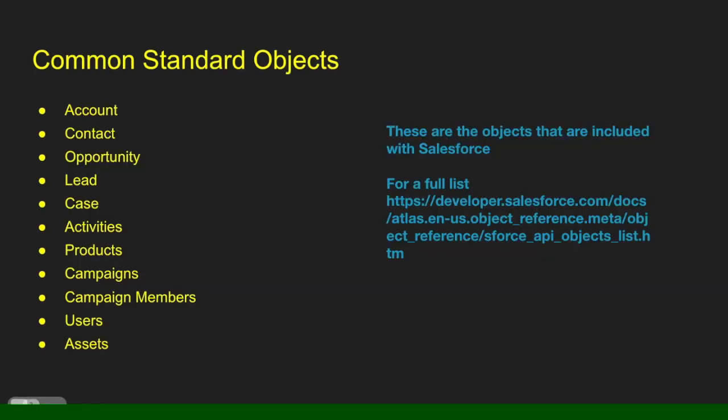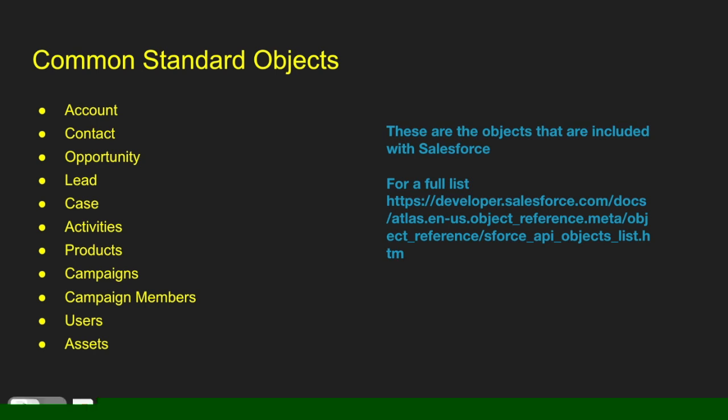Standard objects we have: account, contact, opportunity, lead, case, activities, events, tasks, products, campaigns, campaign members, users, and assets.